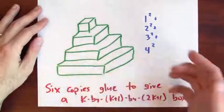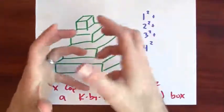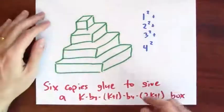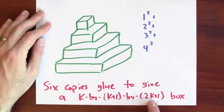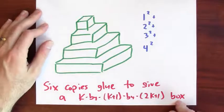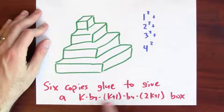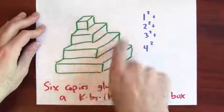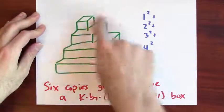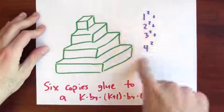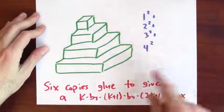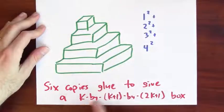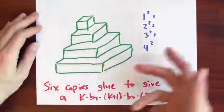I take 6 copies of this pyramid, fit them together, flip 1 over and so forth, until I end up with a k by k plus 1 by 2k plus 1 box. And that box must be comprised of k times k plus 1 times 2k plus 1 little tiny cubes. And since I used 6 copies of this thing, well that means the number of cubes in this thing, which is the sum of 1 squared plus 2 squared until I get to k squared, that sum must be k times k plus 1 times 2k plus 1 divided by 6.